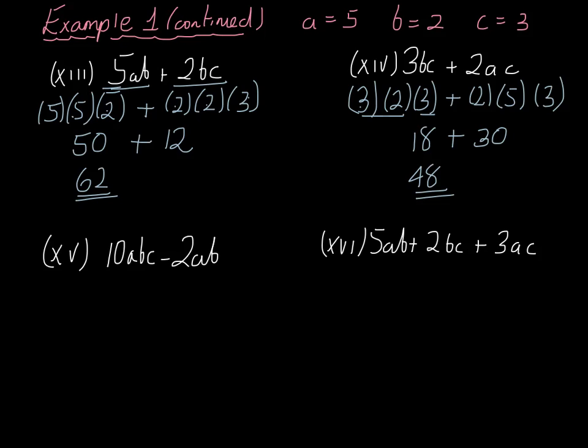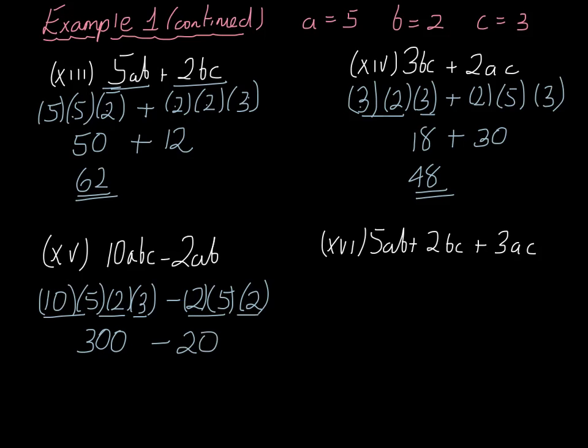Last two complicated examples. It's 10abc subtract 2ab, well that's 10 in brackets, a is 5, b is 2, and c is 3. I'm going to take away two lots in brackets, a is 5, and b is 2. 10 times 5 is 50, times 2 is 100, times 3 is 300. So we have 300 take away 2 times 5 is 10, times the 2 is 20. And 300 take away 20 is 280.